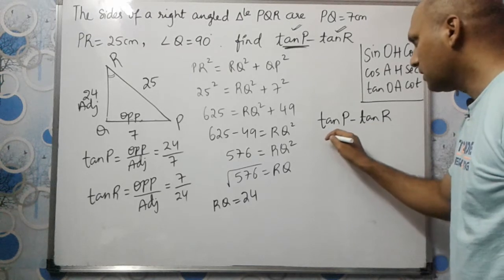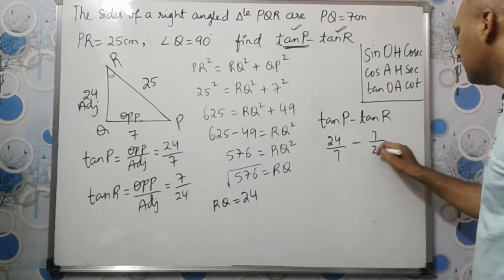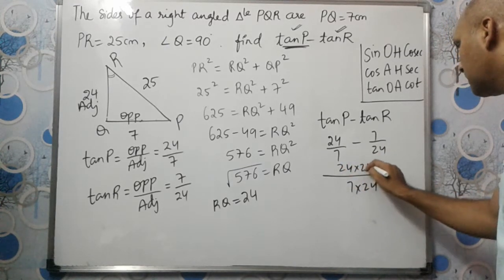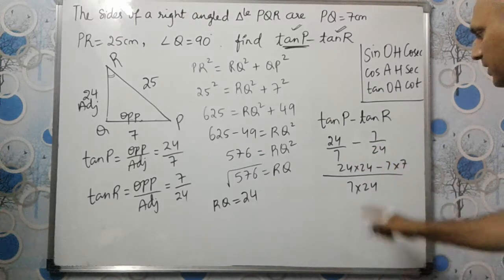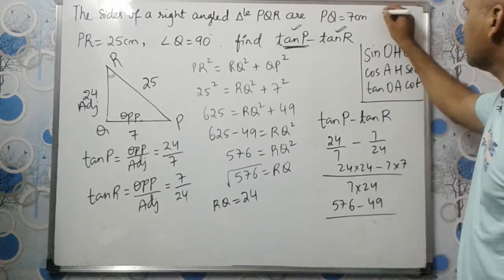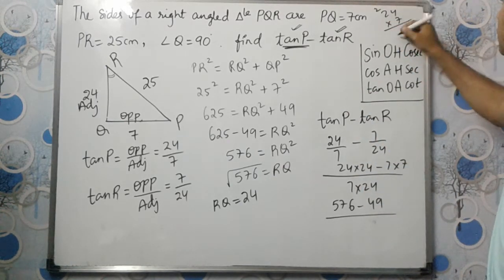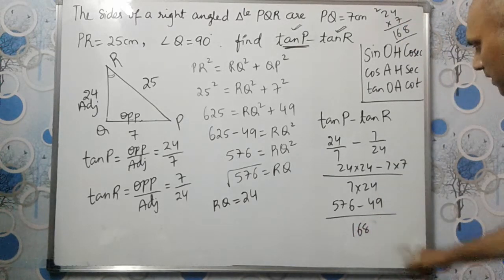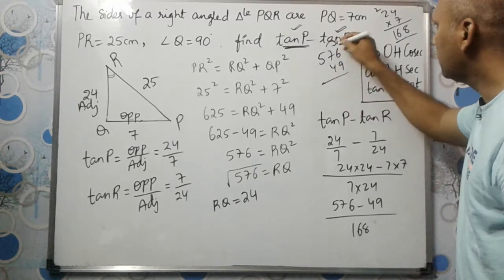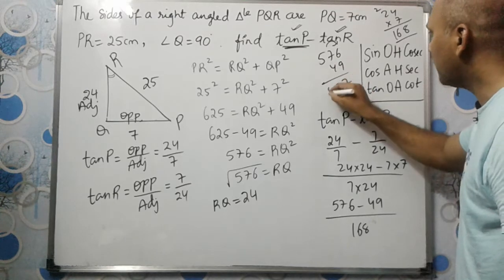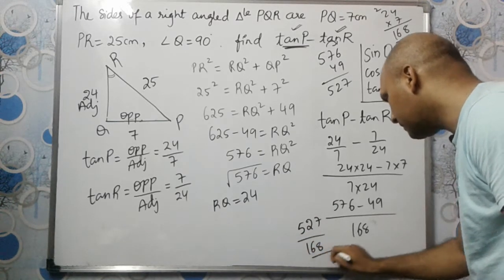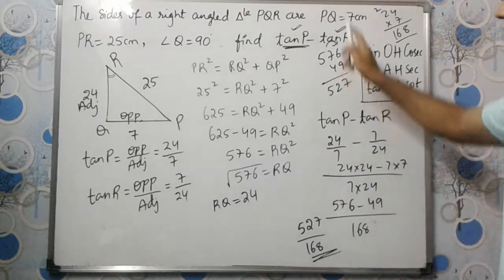Let us substitute the values. Tan P is 24 by 7, tan R is 7 by 24. Denominators are different, so we multiply and cross multiply. This is 24 multiplied by 24 minus 7 multiplied by 7. 24 times 24 is 576 minus 49 divided by 24 into 7. 24 multiplied by 7 is 168. So we got 527 divided by 168. This is the final answer.